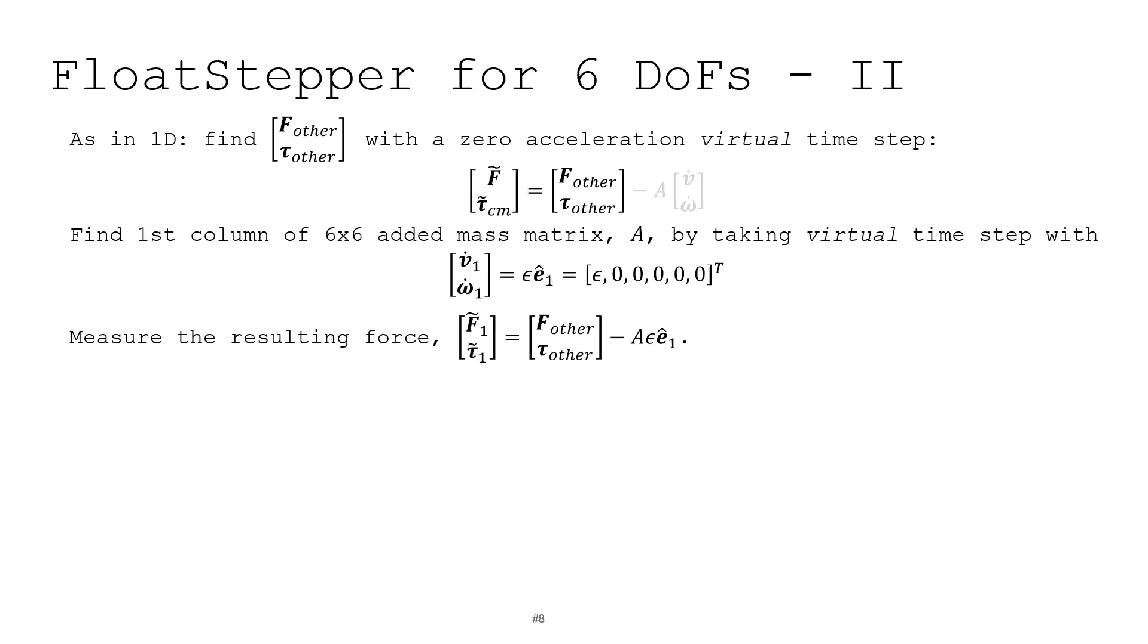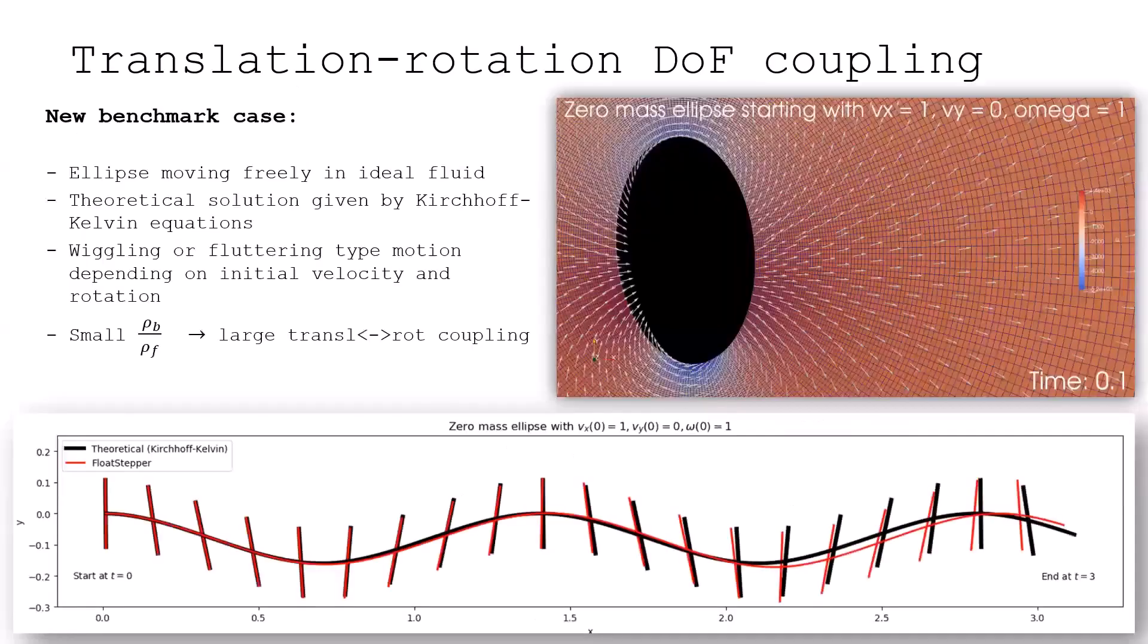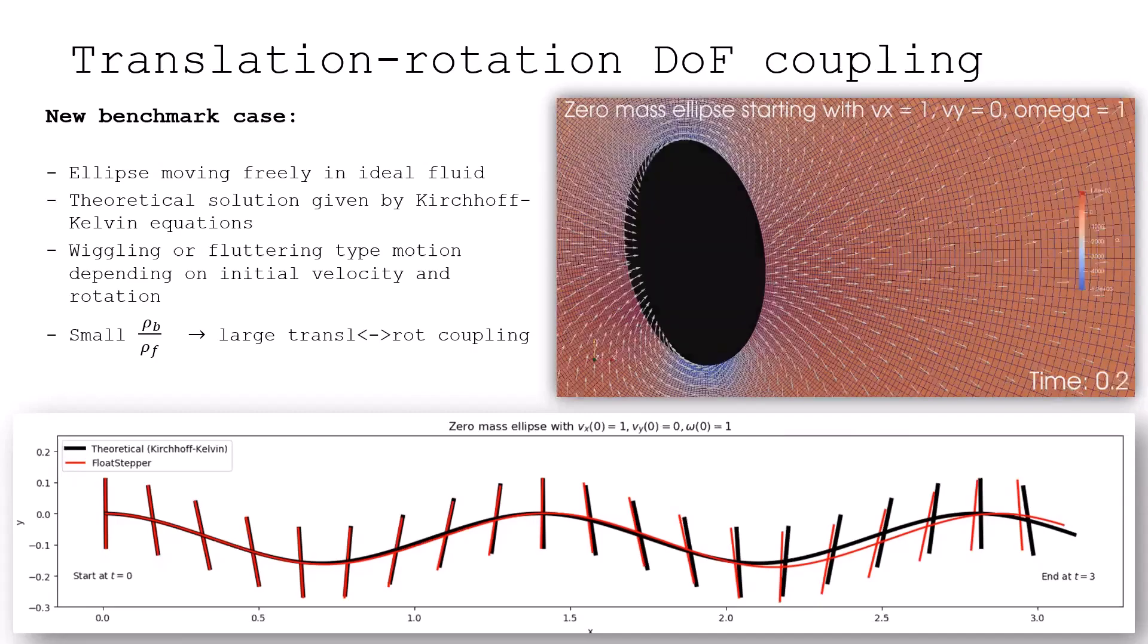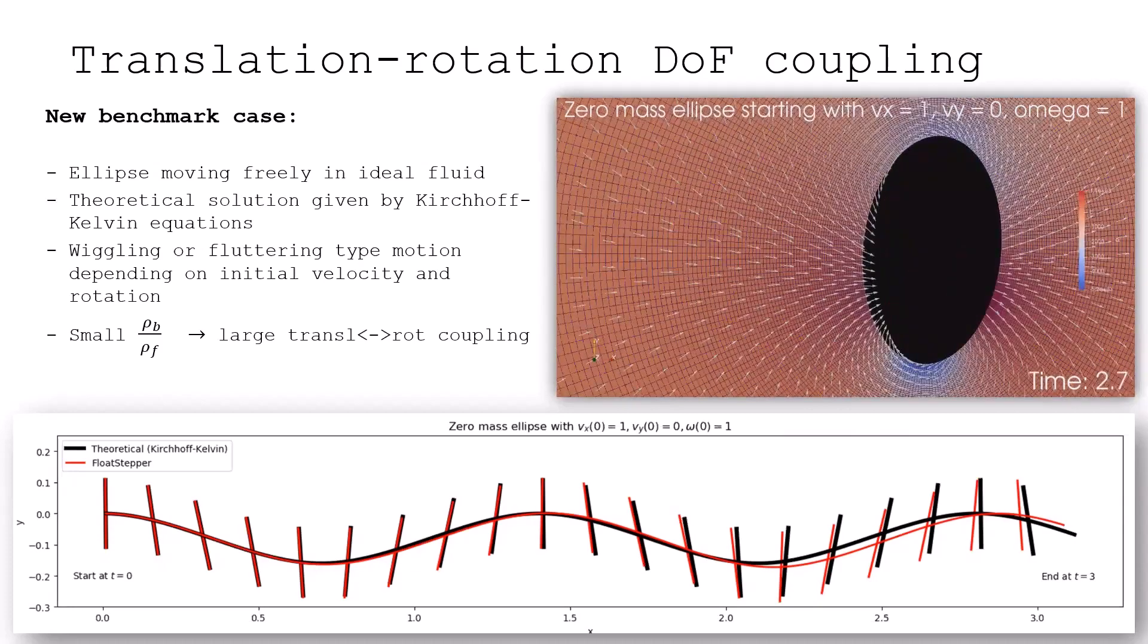So we've implemented this in OpenFOAM and got quite sweaty. But this is basically implemented now. And we've come up with this really nice little test case, which is an elliptic body moving along the x-axis and then rotating. If it's in an infinite ideal fluid, then it should just move indefinitely like this, wiggling back and forth. You can see the theoretical black curve it should follow here. That's from the Kirchhoff-Kelvin equations. So we have something nice to compare with. And this is a nice case because we get this coupling between the translational and the rotational degrees of freedom. And you can see here the FloatStepper does a pretty good job in doing this.